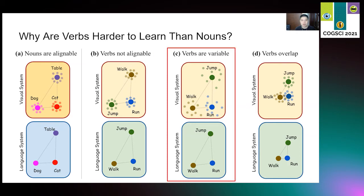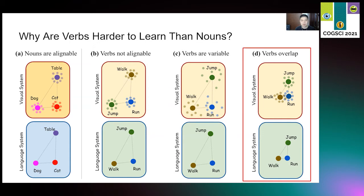Alternatively, individual events for the same verb may be more variable than events for the same noun. Verbs are more dispersed, so they are harder to learn. The third possibility is that events for different verbs may be more similar to each other than events for different nouns. Events referred to by one verb could be similar to events referred to by a different verb, so the exemplars overlap with each other. Putting everything together, we would test the three hypotheses about verbs. First, verb systems may be not alignable across modalities. Second, verb exemplars may be more variable than nouns. And third, verb exemplars may overlap with each other.